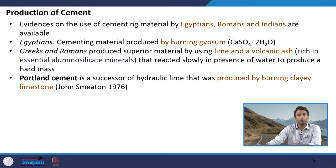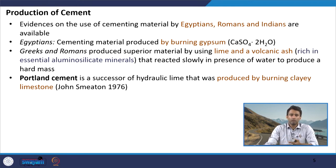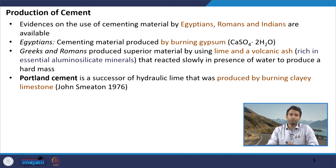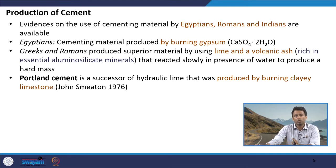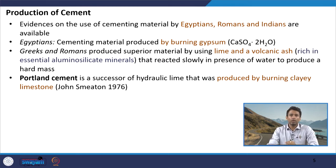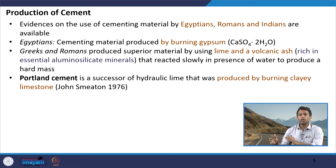Portland cement, or the initial manufactured cement used in the modern age, was basically a successor of hydraulic lime produced by burning clay limestone. This was investigated and developed by John Smitten in 1796. He found that burning specific types of clay limestone through a specific process could yield a cementing product.